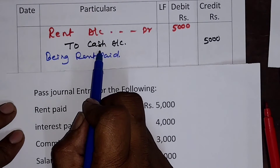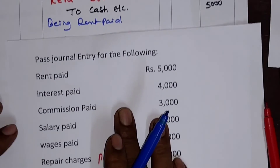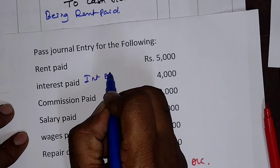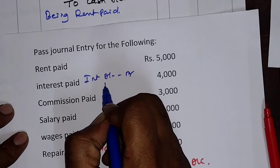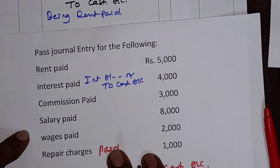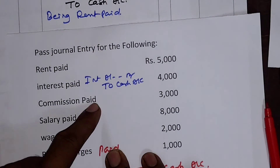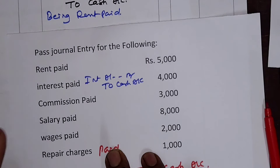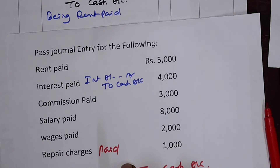For interest paid: Interest Account — Debit — To Cash Account. For commission paid: Commission Account — Debit — To Cash Account. For salary paid: Salary Account — Debit — To Cash Account. For wages paid: Wages Account — Debit — To Cash Account. For repair charges paid: Repairs Account — Debit — To Cash Account.